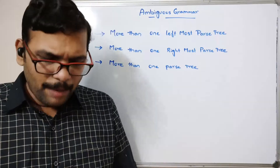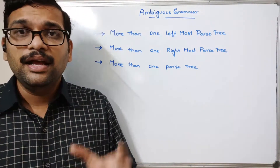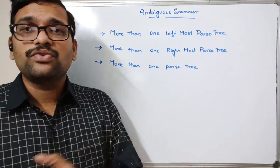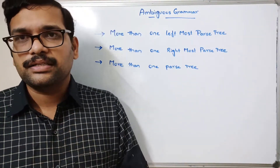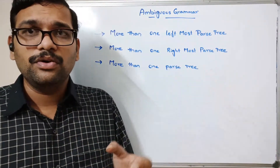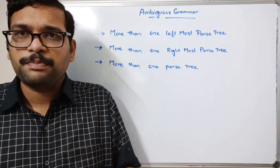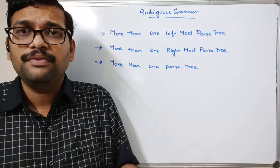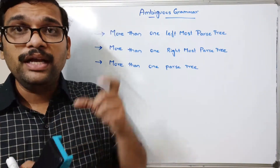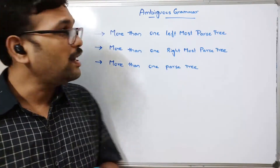The main problem with ambiguous grammar is its application in compiler construction. If the grammar has ambiguity, it is not suitable for compiler construction, because the compiler evaluates only one expression. If the same grammar derives two or more expressions, it is difficult for the compiler to choose the correct one.